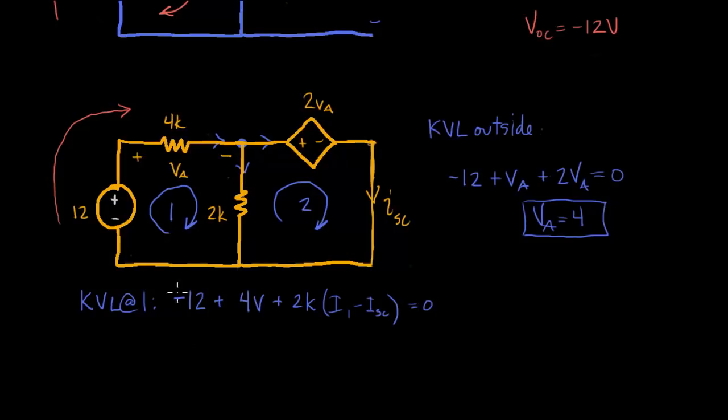Let's move this over to the other side and simplify this equation. So we get 2K times I1 minus 2K ISC is equal to minus 8, so equals plus 8.